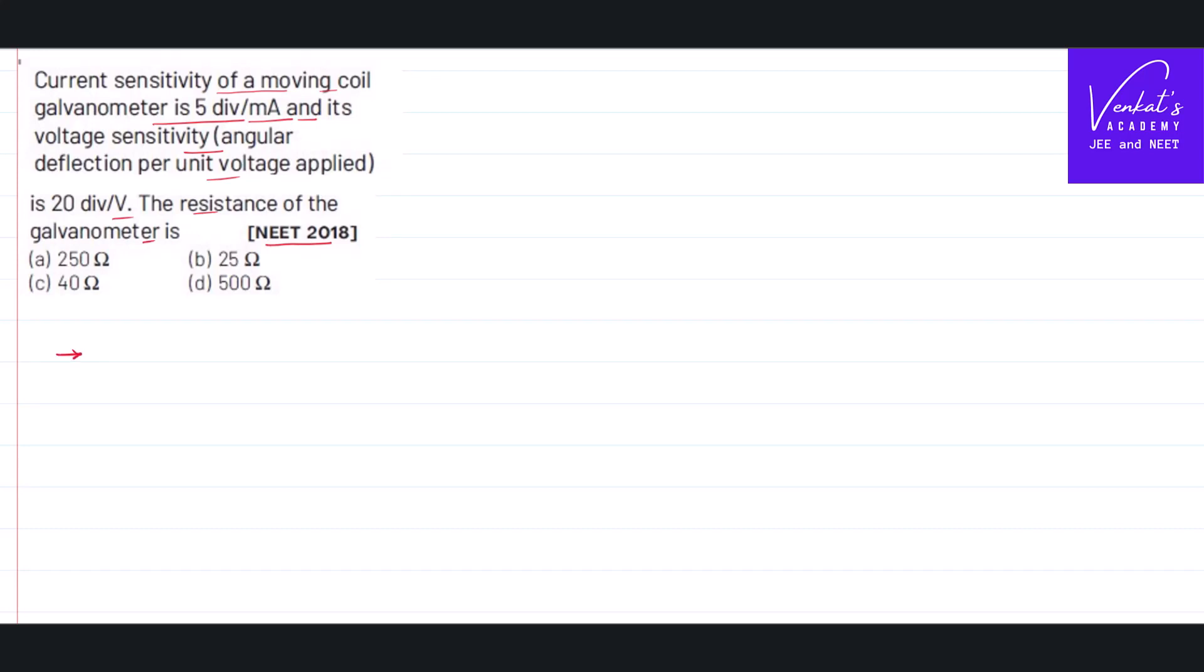First, let us understand how a moving coil galvanometer works. There is a moving coil in which a torque is developed. The maximum torque developed in that moving coil galvanometer is B*I*A*N, where B is the magnetic field in which the coil is placed, I is the current passed to the coil, A is the area of cross section, and N is the number of turns. When this torque is developed, the coil turns, which is directly proportional to the angle by which the coil turns.